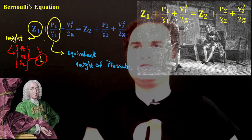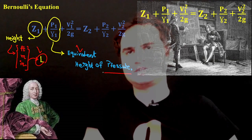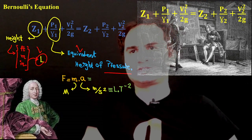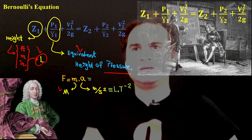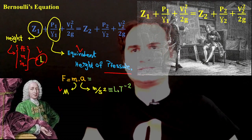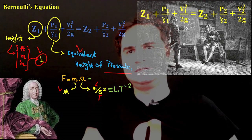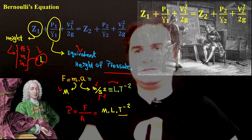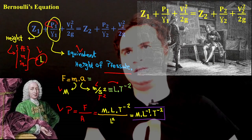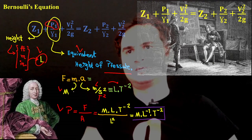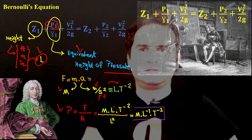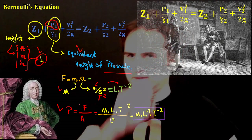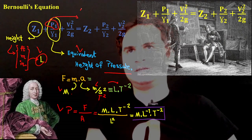The second term, p1/γ1, is the equivalent height of pressure. To analyze its dimensions: force equals mass times acceleration, so force has dimensions M·L·T⁻². Pressure is force over area, so its dimensions are M·L·T⁻² divided by L², which gives M·L⁻¹·T⁻². That is the numerator (pressure) in dimensional form.